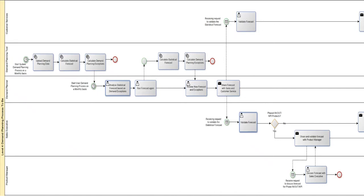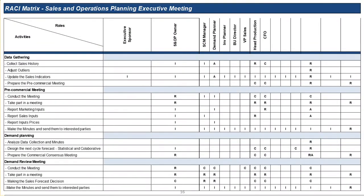So here we are already at level four, and sometimes you have to go to level five or level six, because here you still see activities. At level five, you will start doing tasks where one activity is split into many tasks. You see in this screenshot that you have system actors — for example, the demand planning tool — but you also have human actors: customer service, the demand planner, the sales executive, and in this example, a product manager. This is also the basis for your organization, because based on level four and level five, you can prepare a RACI matrix, which gives you an idea for all activities in a specific process of who is responsible, who is accountable, who should be consulted, and who should be informed.